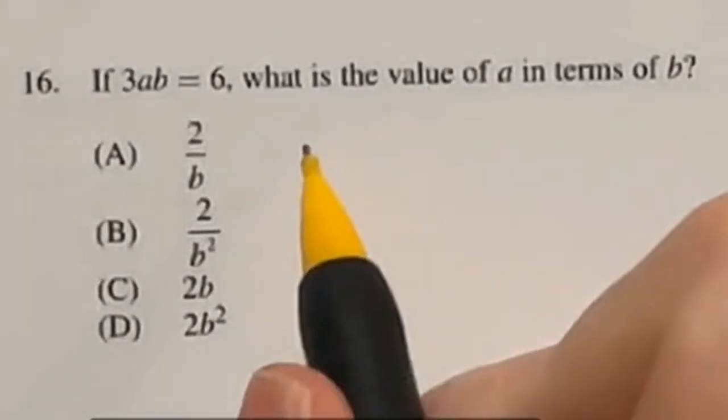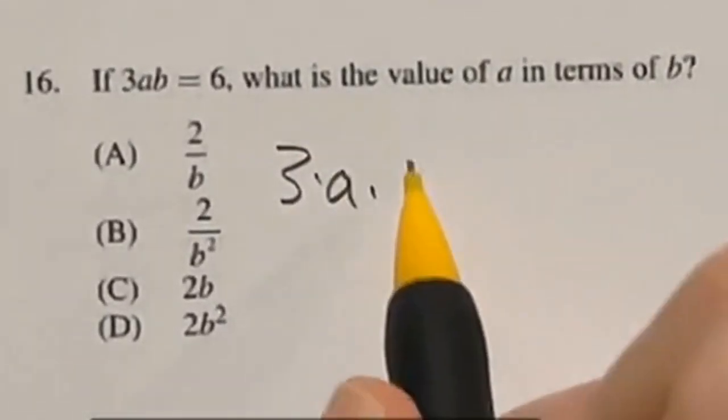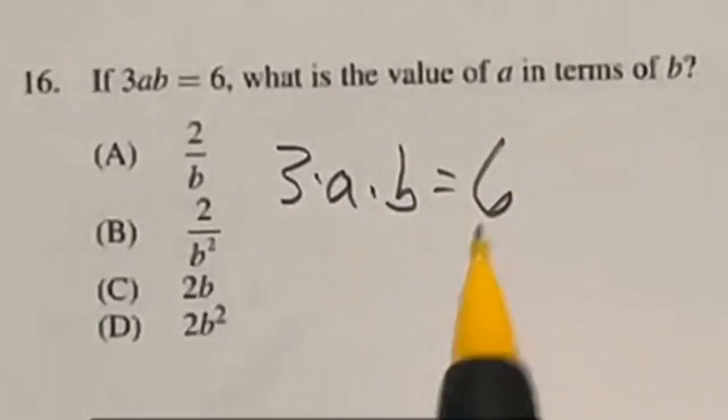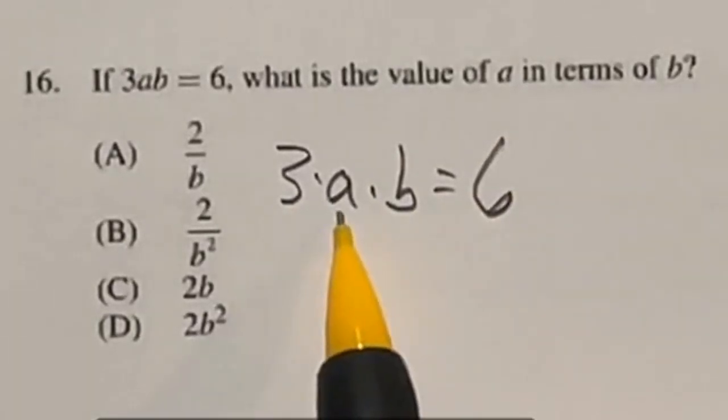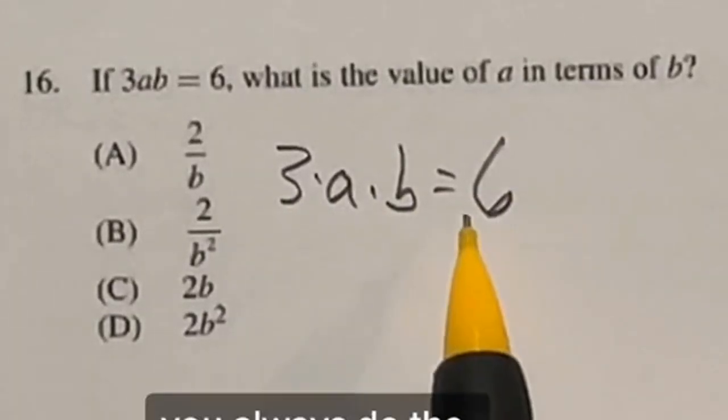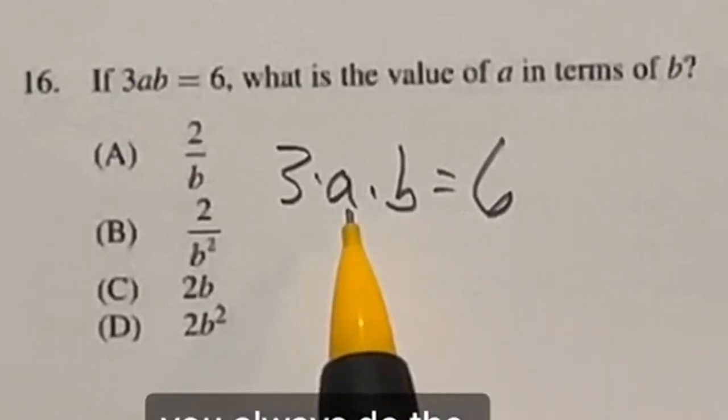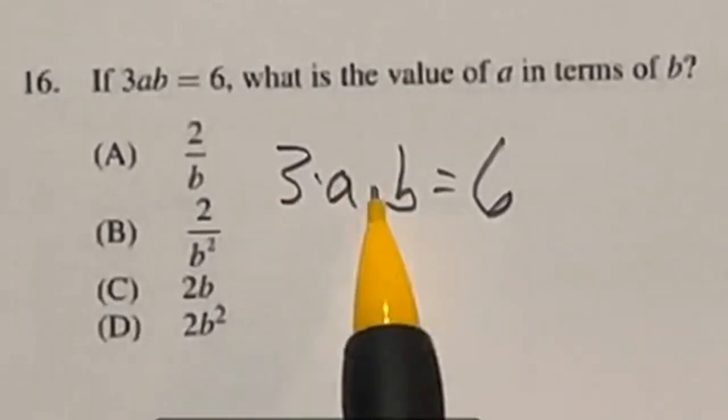Number 16 is just algebra work of saying 3 times A times B is equal to 6, and we have to get A by itself. In order to move things to the other side, you always do the opposite of whatever that function is. In this case, we're multiplying both of these.